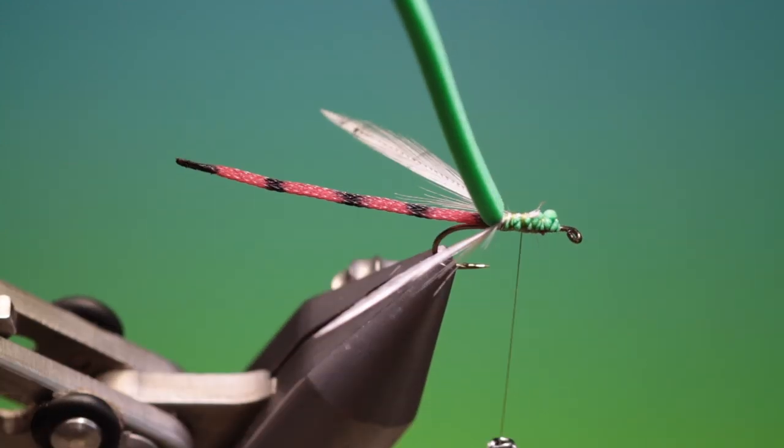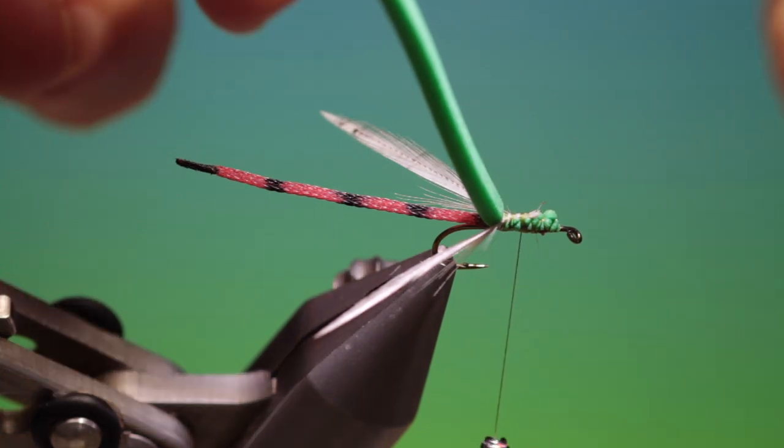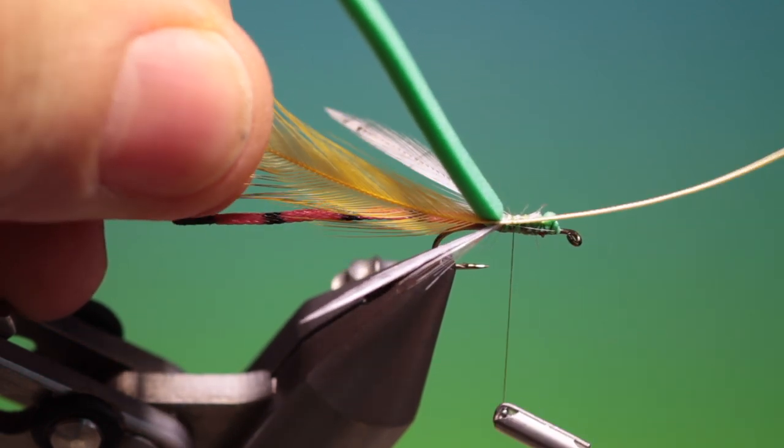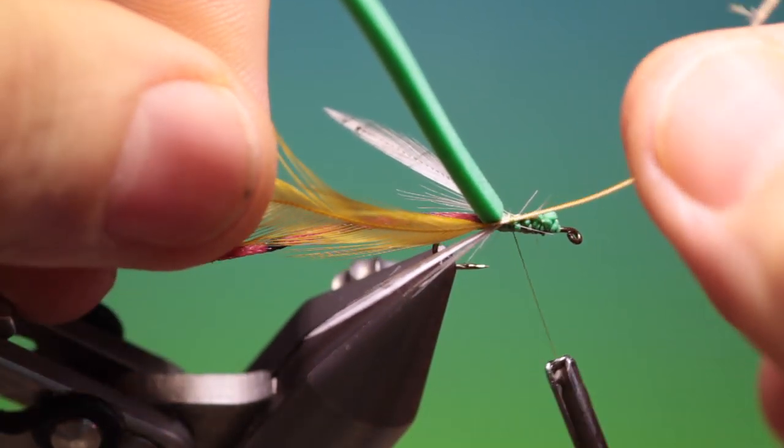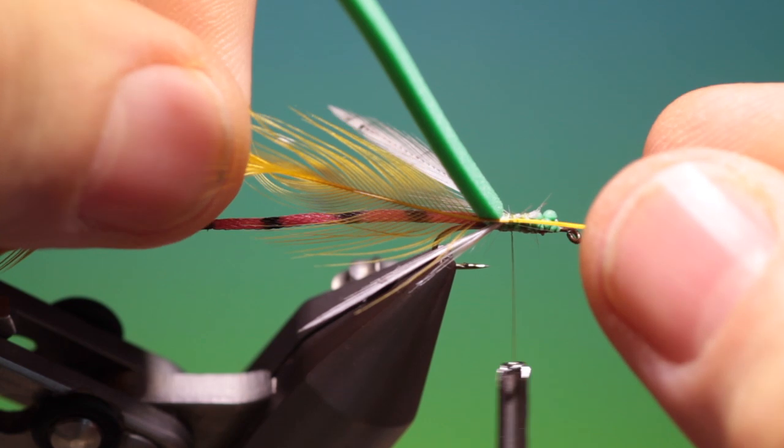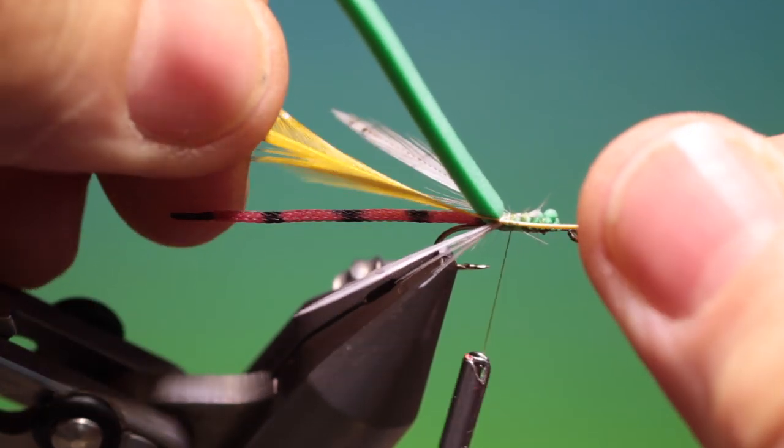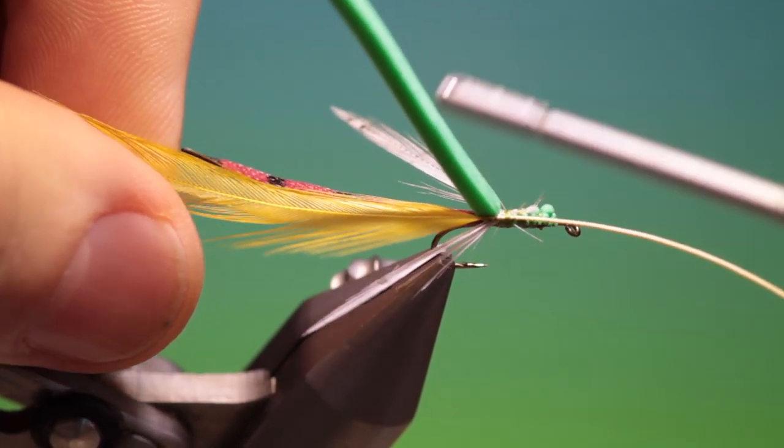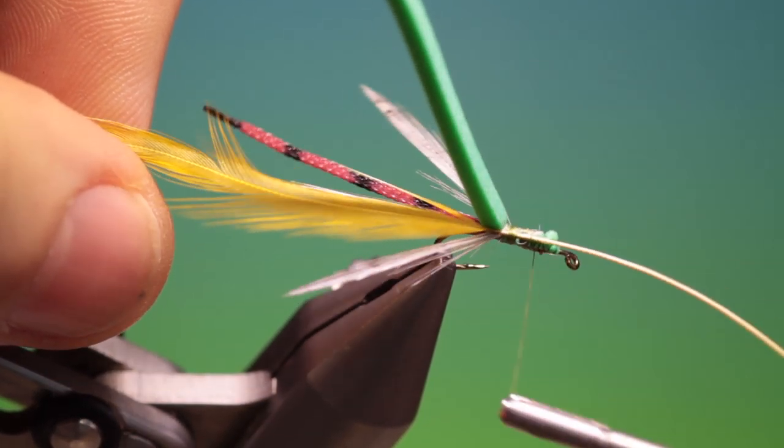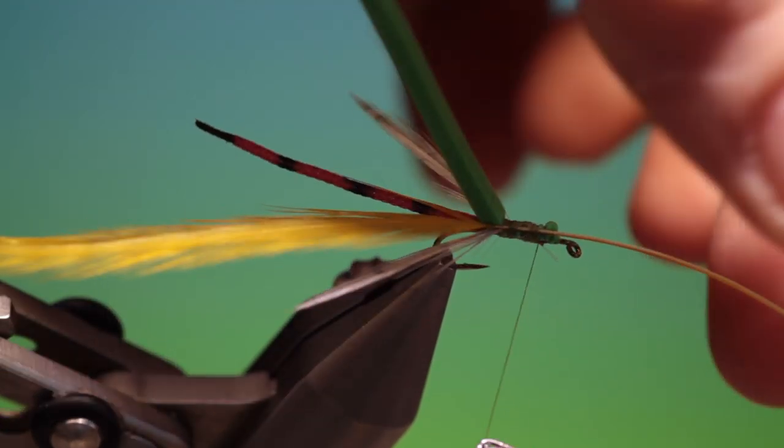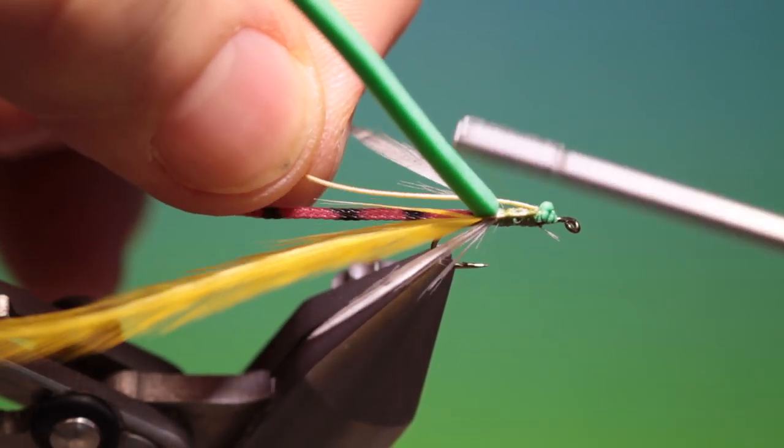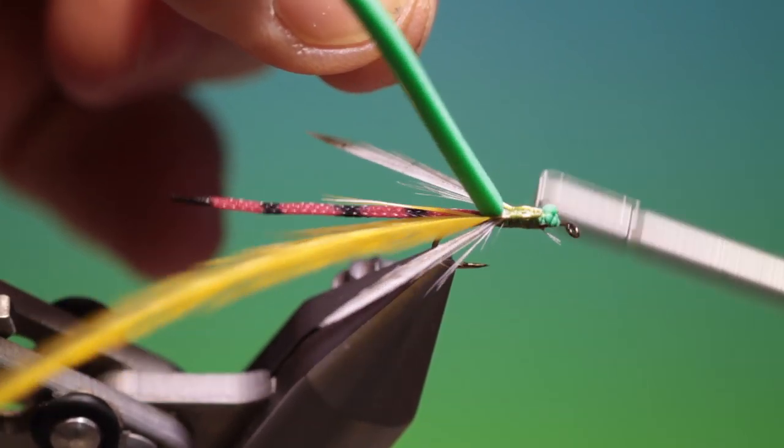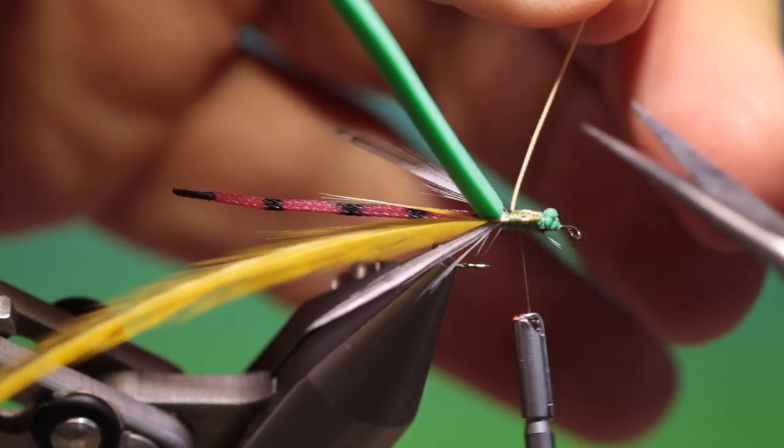So then we can just tack these in, remove all that. A couple of stragglers there, let's get rid of those so they don't cause any. That's looking good, got our two wings. Then what we need is a golden olive hackle, which we'll tie in there.